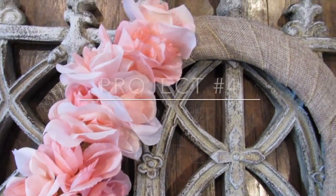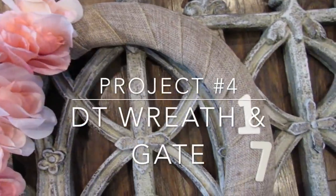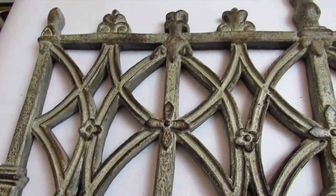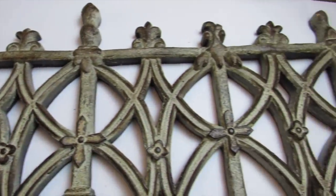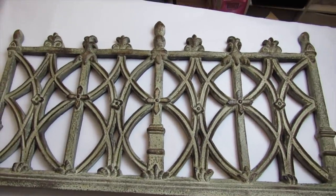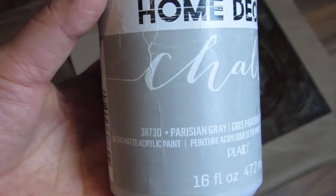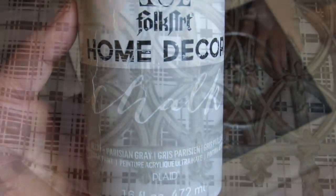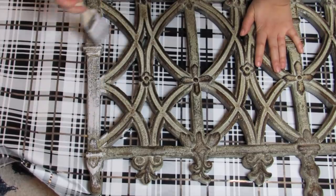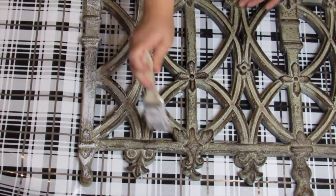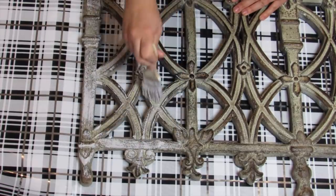For the next project I'll be making a super simple Dollar Tree wreath and pairing it with this really pretty gate piece that my mom also gave me. She's awesome, she's always giving me home decor to kind of flip. I will be dry brushing the Folk Art Parisian Gray chalk paint just like I did the other wall decor piece, just dry brushing this onto this gate.